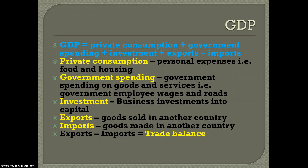Government spending is how much the government spends on goods and services. For example, how much it pays its employees, how much it pays to have the roads worked on — the materials they bring in, the asphalt, the bulldozers, the steamrollers to pave those roads. Anything that the government is spending money on.